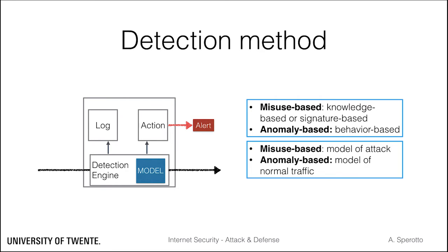We have an anomaly-based IDS if the internal model describes how normal traffic looks like. We have a misuse-based IDS if the internal model describes how an attack looks like. In this case, an IDS works similarly to a virus scanner with signatures of known attacks. The advantage is that since there is a clear description of the attack, it rarely raises false positives. On the other hand, new attacks for which no signature is yet available will not be detected.